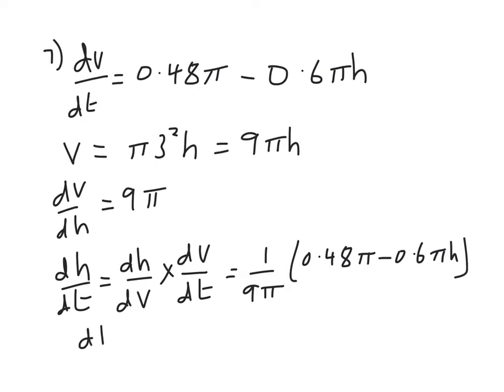So dh/dt, let's get rid of those pesky π's, equals 0.48 minus 0.6h over 9.